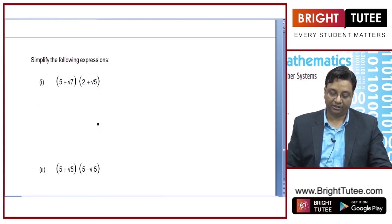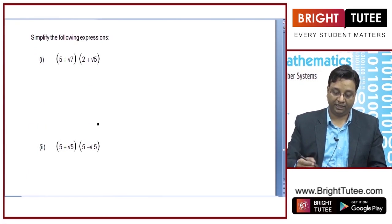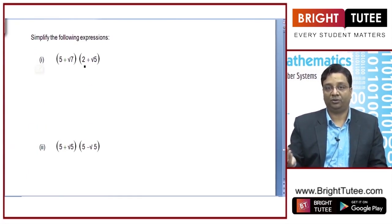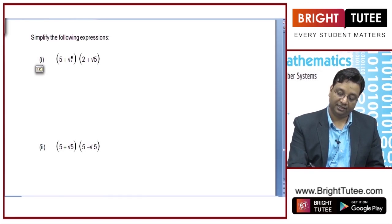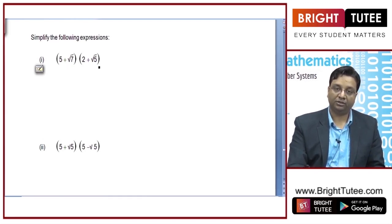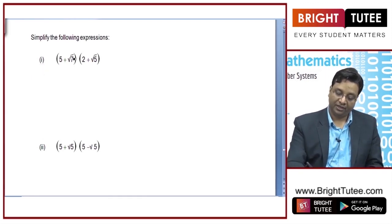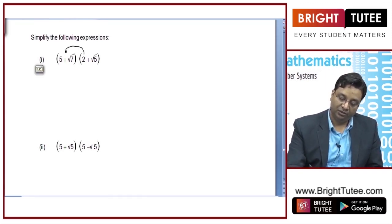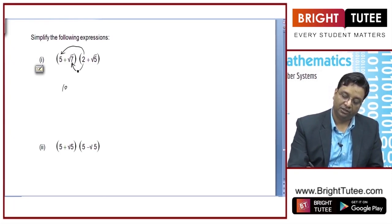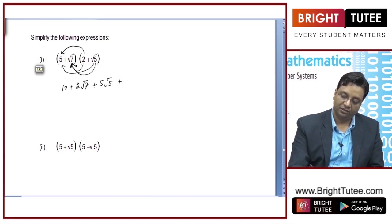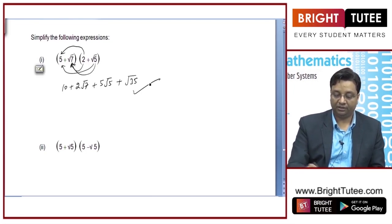Simplify the following expressions. By simplifying, I mean write it in the form of sum or difference of rational and irrational parts. So for (5 + √7)(2 + √5): multiply 2 with 5 to get 10, then 2 with √7 to get 2√7, then √5 with 5 to get 5√5, then √5 with √7 to get √35. So the simplification gives 10 + 2√7 + 5√5 + √35.